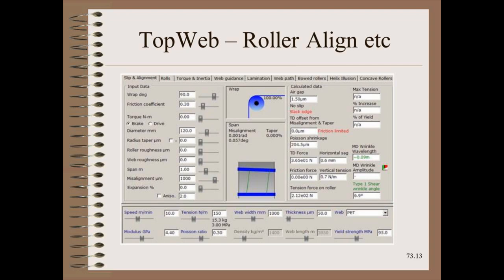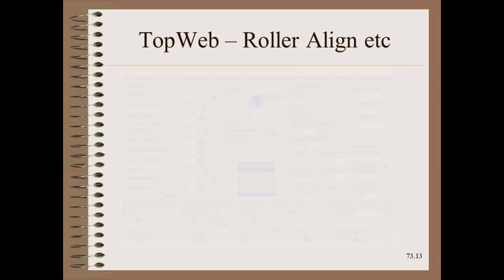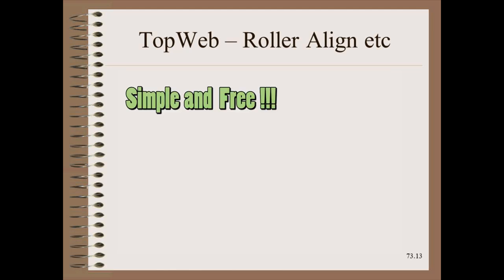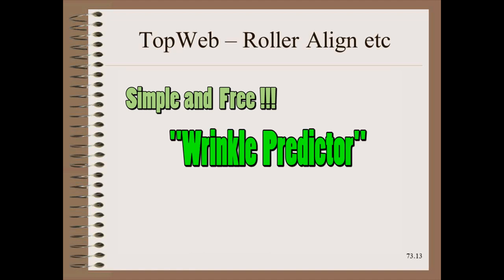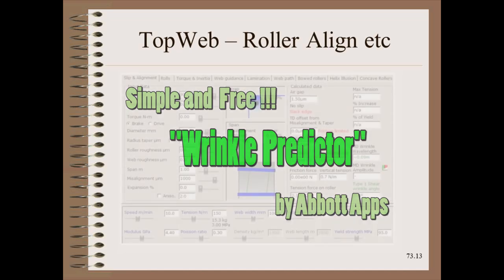While Top Web is very powerful, it does have a couple of disadvantages. First, it is expensive. Second, it may be more than you need if all you want to do is determine the standards for roller misalignments. An alternative program that is simple and free is the Wrinkle Predictor Abbott app, where you only need access to the internet and a few simple inputs.